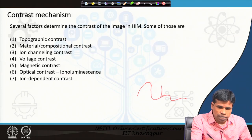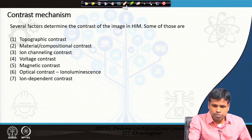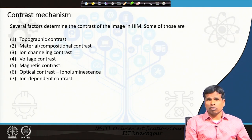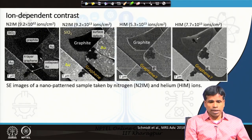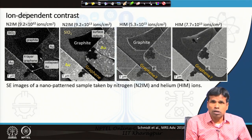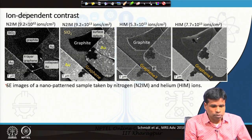An additional contrast mechanism is ion-dependent contrast. Because we can use different types of ions in ion microscopy — and unlike electrons, not all ions are the same — we can change the ions and observe what different contrast is produced. Here is a recent study comparing nitrogen ion microscopy and helium ion microscopy of the same sample.